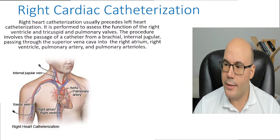It's also very important to check renal function to determine the amount of dye to be administered. Why do we need to check renal function? Because the contrast is nephrotoxic. If the patient already has renal compromise, the contrast can be very harmful. So we need that baseline, and depending on the lab values, we'll know exactly the amount of dye that will be administered during the procedure.